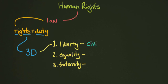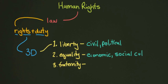The first dimension is civil and political — we talked quite a bit about that in one lesson. The next one is economic, social, and cultural. And then the last one, number three, is our collective rights. You'll remember all the details of how they work if you go back and watch the videos.